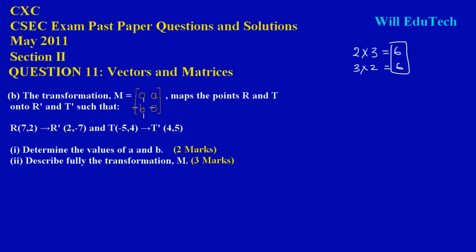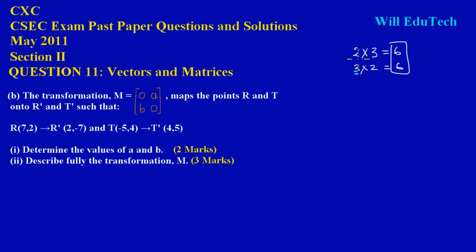Since matrix M maps the object points onto their corresponding image points — R onto R prime, and T onto T prime — the matrix must go at the front of the multiplication. So I'll write my matrix [0, a; B, 0] at the front.